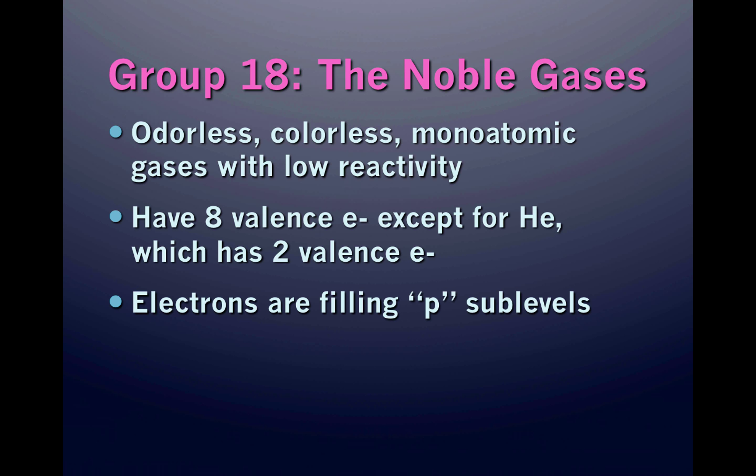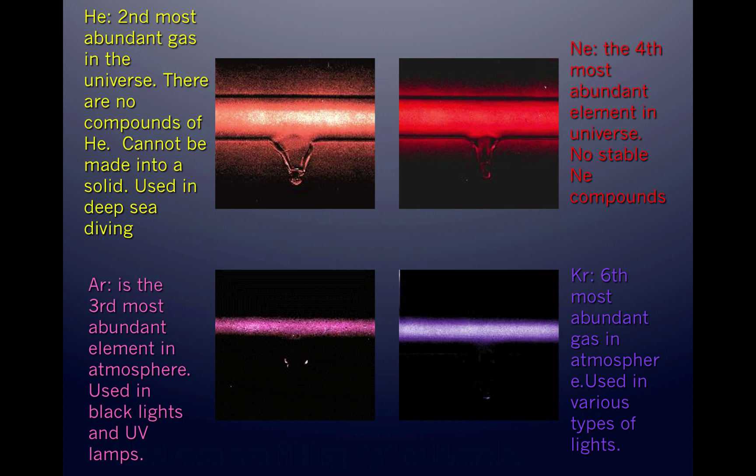Group 18 are the noble gases. They are odorless, colorless, monatomic gases with low reactivity. Monatomic means one-atom gas — they are not diatomic; there is no such thing as He₂ or Ne₂. They all have 8 valence electrons, except for helium, which has 2. The outermost electrons of the noble gases are filling P sublevels. Notice the different colors produced by the noble gases.